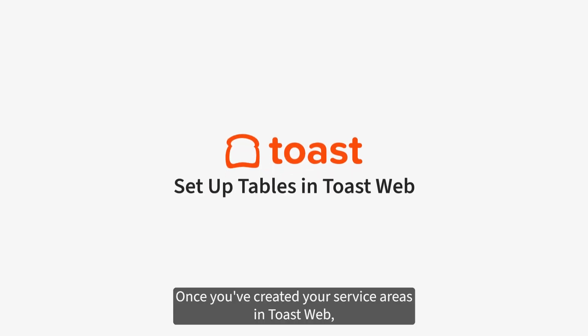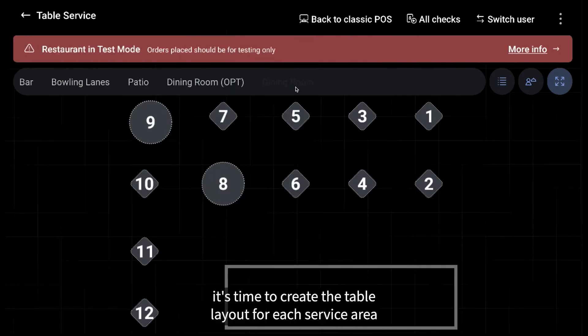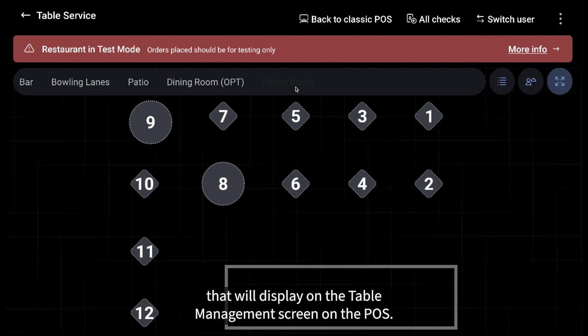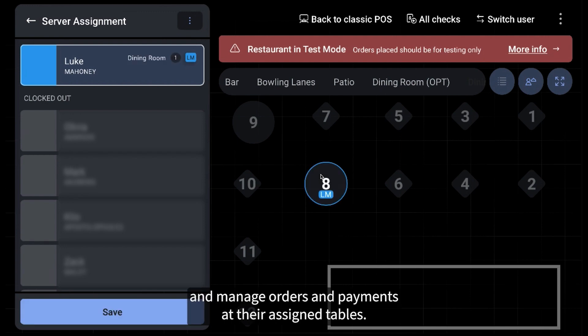Once you've created your service areas in ToastWeb, it's time to create the table layout for each service area that will display on the table management screen on the POS. The goal is to create a visual representation of the service area's floor plan so your front-of-house staff can be assigned to tables and manage orders and payments at their assigned tables.